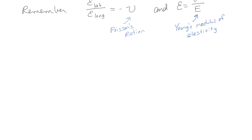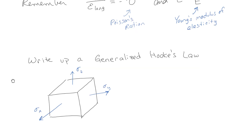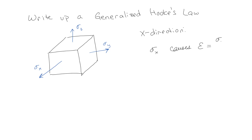The first thing we're going to do is write up a generalized Hooke's Law. We've got a little cube with stresses coming out in all the different directions. Let's specifically look at what is happening in the x direction. This stress is going to cause — I'll say 'causes' rather than equals — this particular strain: sigma x over Young's modulus.